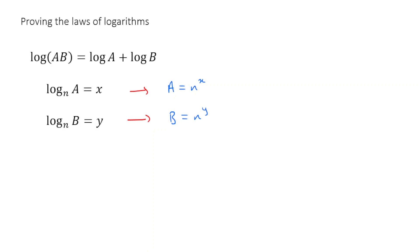Now if that's the case, what I can do is actually multiply these two together. I will get a times b is equal to n to the x times by n to the y. And of course, n to the x times n to the y is n to the power of x plus y, because I just add up the powers, as we learned a few weeks ago.